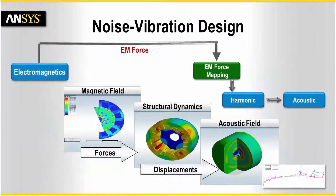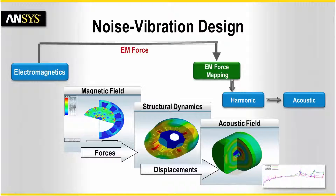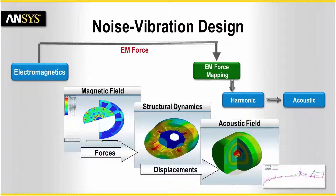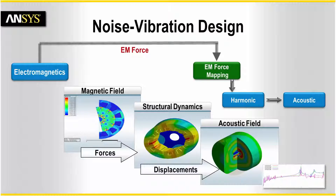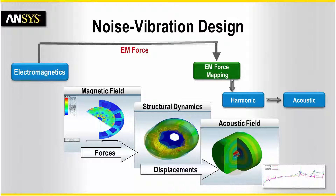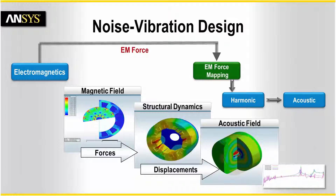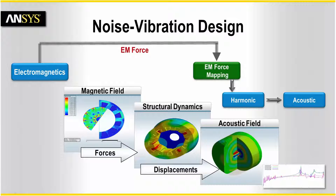ANSYS Maxwell can be coupled to other 3D physics solvers in the ANSYS Workbench. Here's an example of a noise and vibration analysis. ANSYS Maxwell is used to compute the electromagnetic fields, then we pass transient electromagnetically induced forces to a structural dynamics simulation in ANSYS Mechanical to compute structural harmonics. Those harmonics change the shape of the stator, which in turn produces an acoustic field as computed by Mechanical. This approach can be used to predict acoustic noise and hence enables you to apply strategies to reduce that noise.